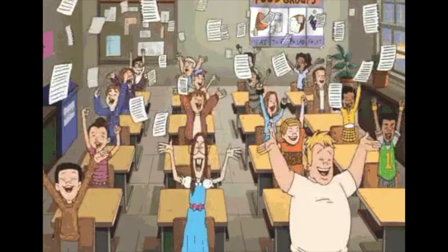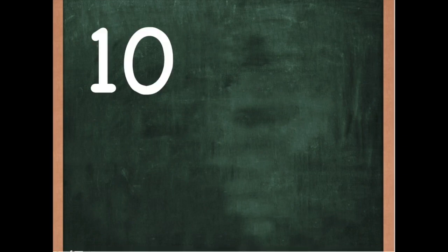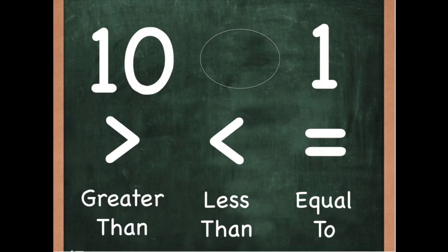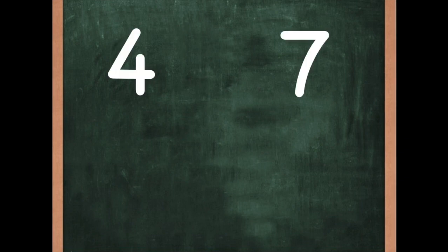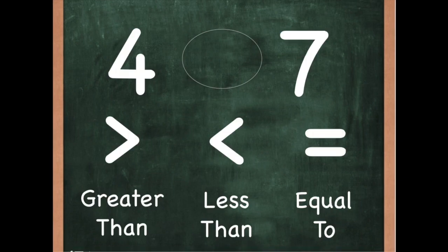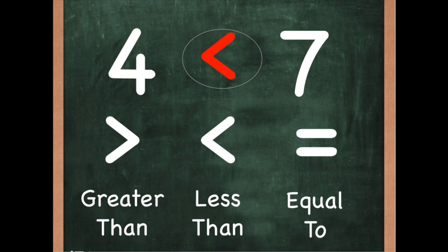Now let's practice! If you have a ten and a one, which symbol should you use? That's right — greater than! Let's do another one. If you have a four and a seven, which symbol will we use? That's right — less than!